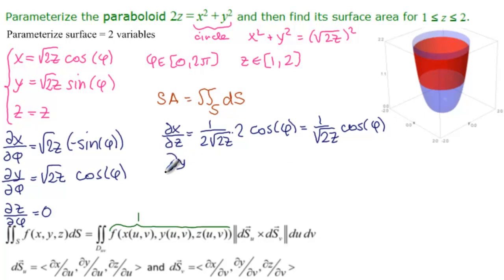And then we have delta y delta z. We can see it's the same 1 over the square root of 2z. And what do we have? Sine of phi here. And then we have delta z delta z, which we hope is indeed 1. And it is.